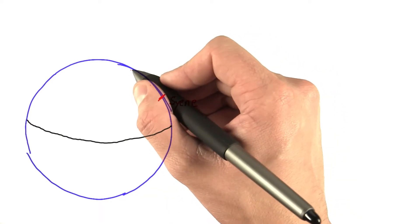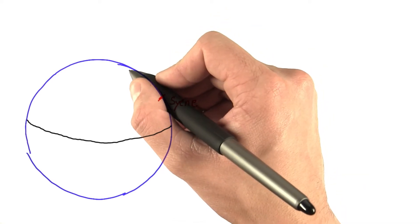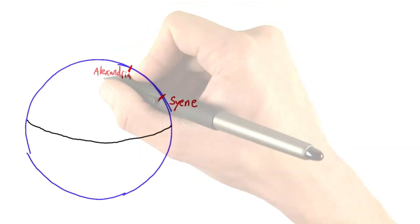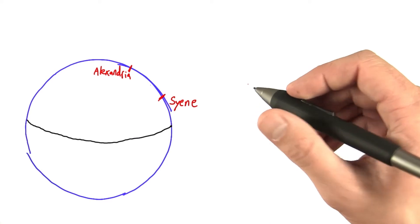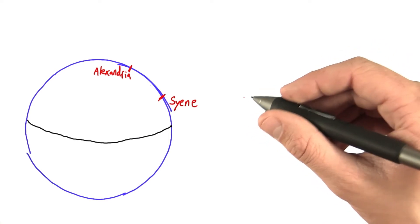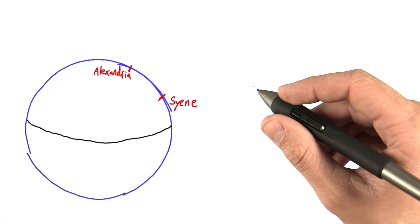And somewhere here, and I'm going to exaggerate this distance to make the drawing easier, we have Alexandria. Now, to begin solving this problem, Eratosthenes did what physicists often do when they're tackling a really difficult problem. He made an assumption.